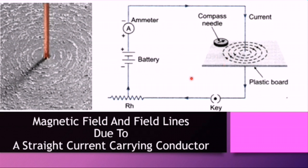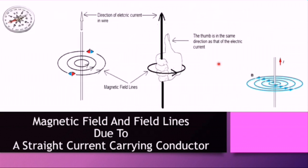To recap: the magnetic field lines due to a long current-carrying wire are concentric circles — they do not intersect and are equidistant from each other. However, the weaker field further from the wire is represented by drawing field lines further apart. As the distance from the wire increases, the field lines are at a larger spacing compared to those closer to the conductor.